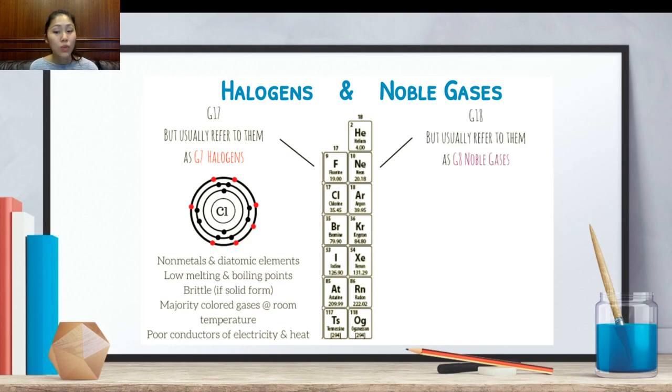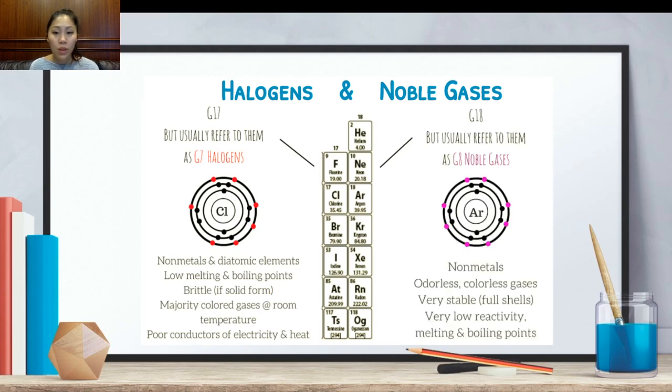Group 18, also known as group 8, are the noble gases. An example here would be looking at the structure of an argon. And noble gases are non-metals. They are odorless and colorless gases. They are very stable. They have full shells. So if you notice, like the outside, the purple electrons are all filled up, which means that their outermost valence shell is full. They have very low reactivity melting and boiling points because they are so stable.